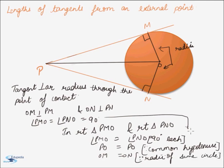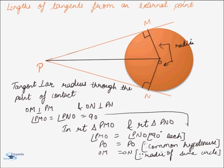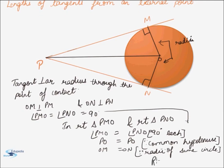Thus, we have a right angle in both the triangles and two sides equal. So, by RHS congruency criteria, triangle PMO is congruent to triangle PNO.